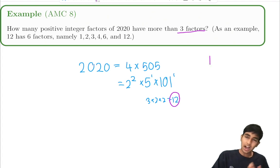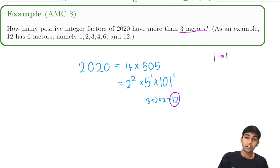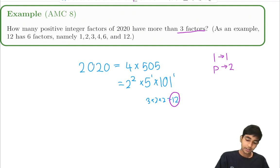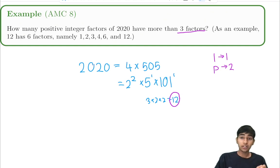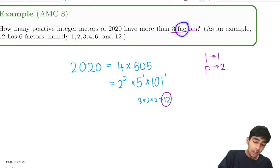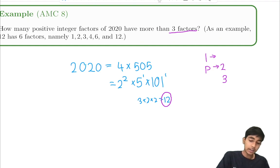We'll use complementary counting. We have 12 total factors, and we'll subtract those that don't have more than 3 factors — meaning those with 1, 2, or 3 factors. The only number with 1 factor is 1. The only numbers with 2 factors are primes, since primes have just 1 and themselves.